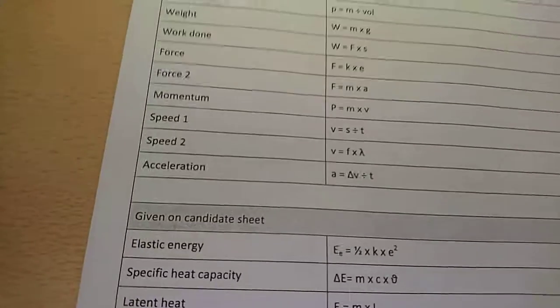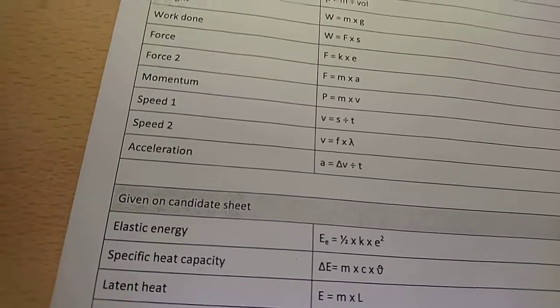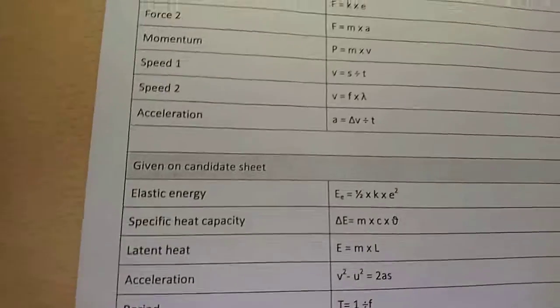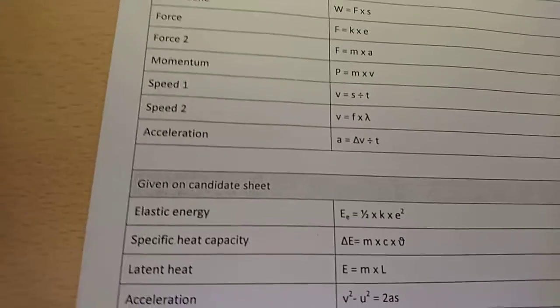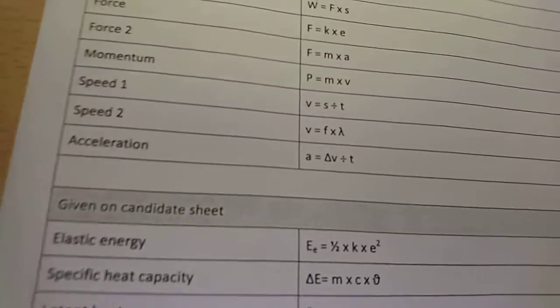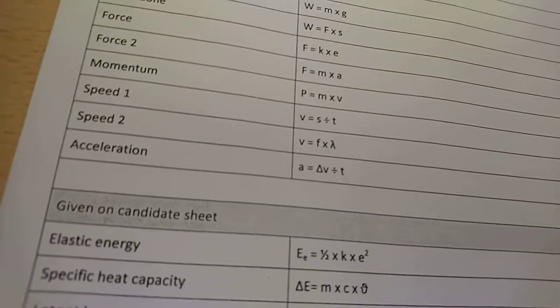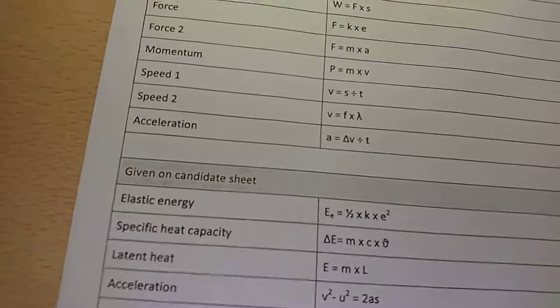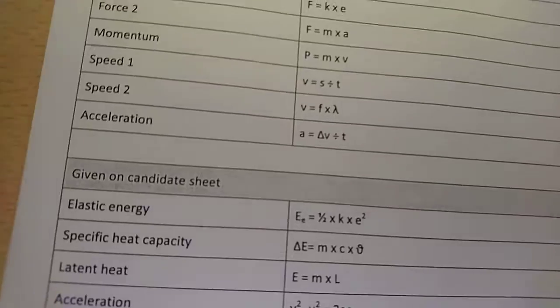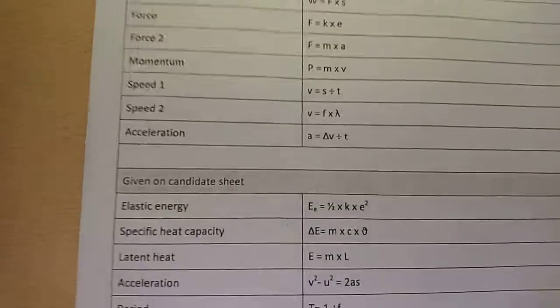And then another thing for speed is the speed of waves. So velocity equals frequency times wavelength. And then of course we have acceleration. A, acceleration, equals the change in velocity divided by T, which is time. And remember the change in velocity is the final velocity minus the initial velocity, as you only want the bit that's actually changed.